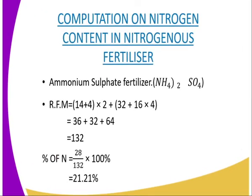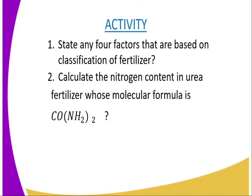Then we have computation of nitrogenous fertilizers. Take ammonium sulfate fertilizer — we have its chemical formula as shown. The first step is to calculate the relative formula mass of the fertilizer. As illustrated, ammonium sulfate has a relative formula mass of 132. For the nitrogen content: inside the bracket there is one nitrogen, but outside the bracket is the figure 2. The relative atomic mass of nitrogen is 14, so 14 multiplied by 2 gives 28. Then 28 divided by the relative formula mass, multiplied by 100, gives the nitrogen content percentage — that is 21.21%. That is the end of today's lesson.